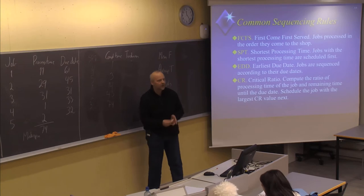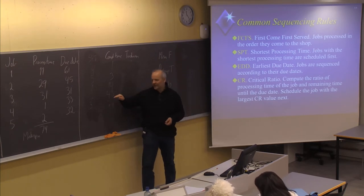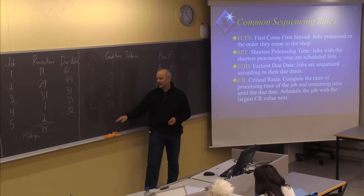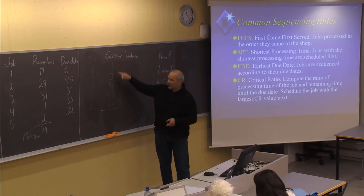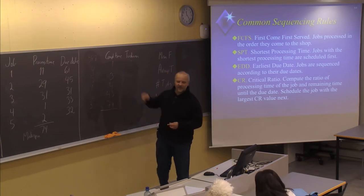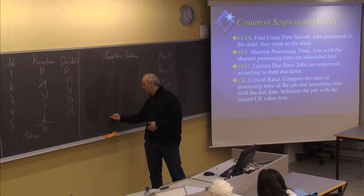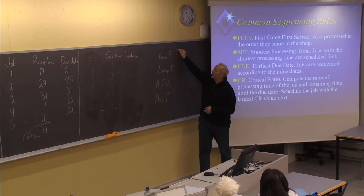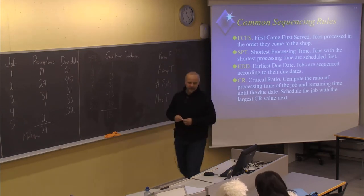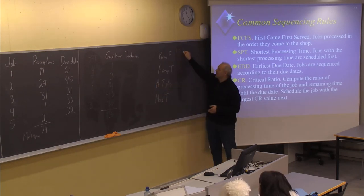Since we have only one machine, the makespan is 74, and the job scheduled last will always be finished by day 74. Let's sum the numbers in this column. We get 135, and 135 divided by five will then be 27. So the mean flow time in this case will be 27.